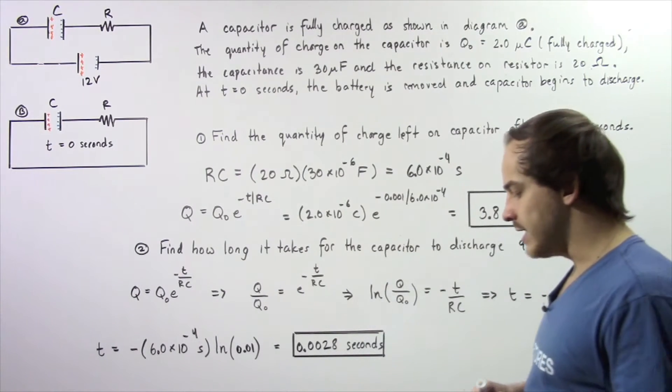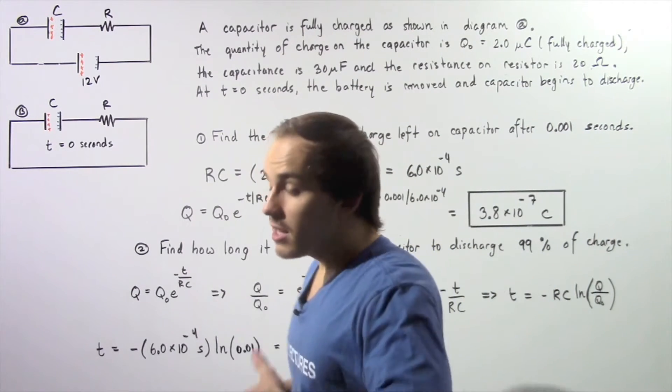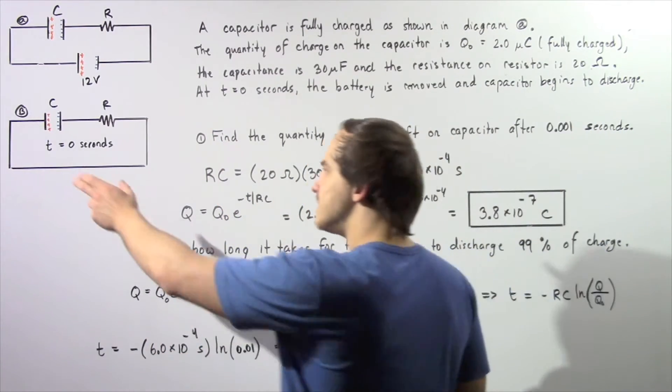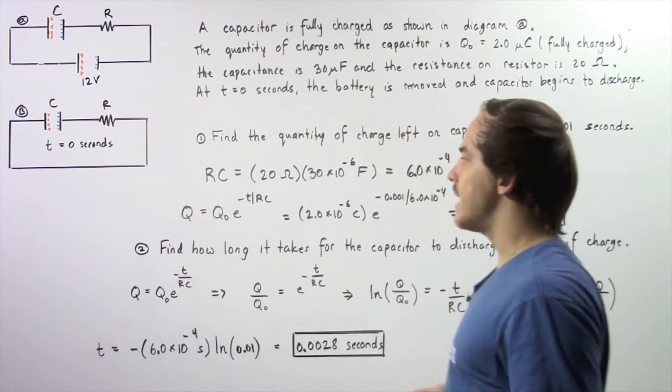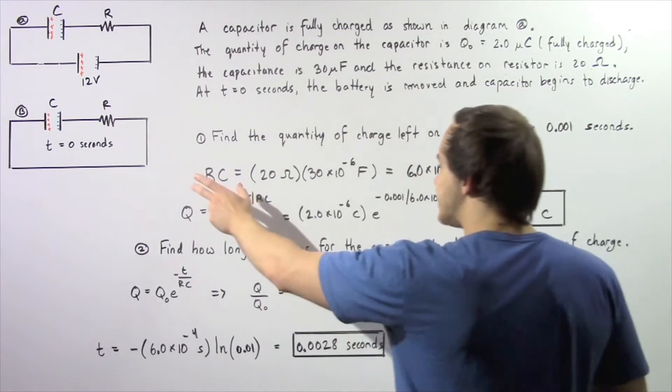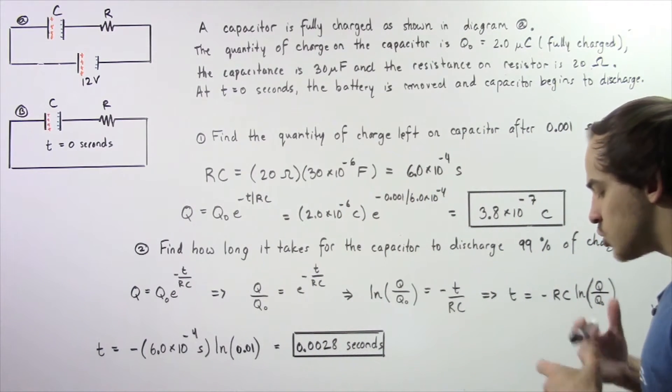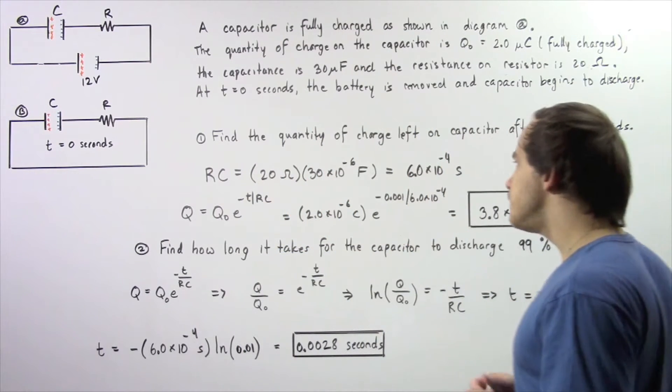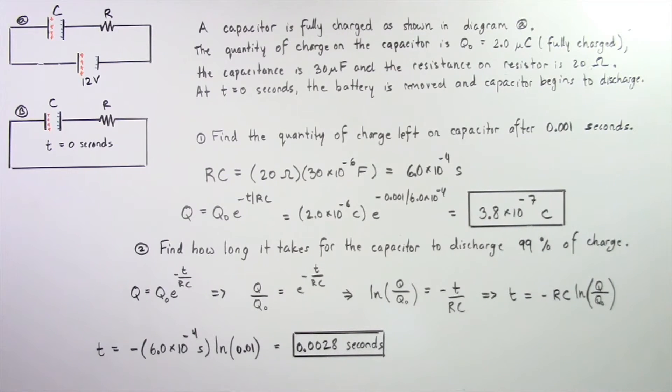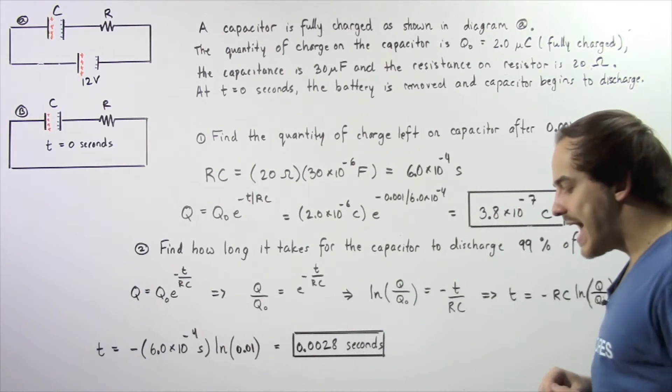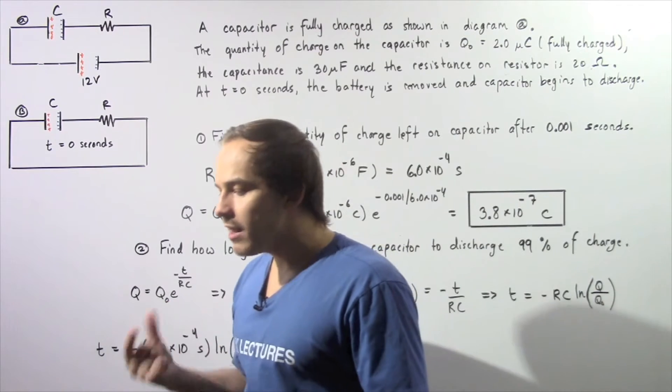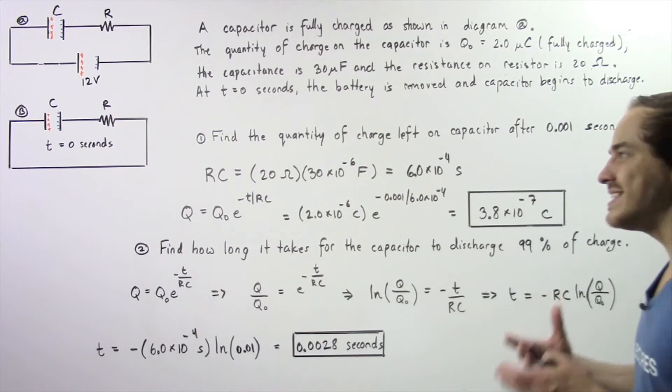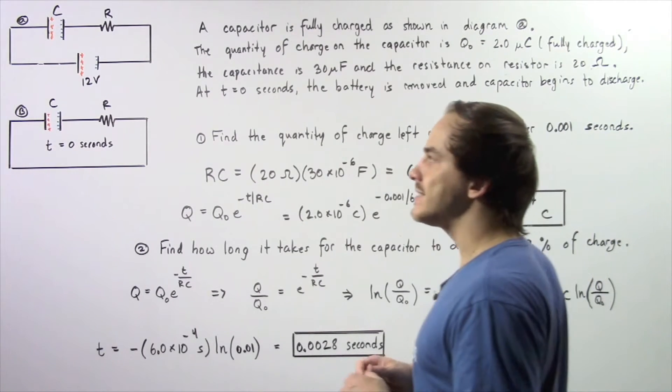Let's begin by calculating the time constant. The time constant of our capacitor is simply the product of the capacitance and the resistance, R multiplied by C. So 20 ohms multiplied by 30 times 10 to the negative 6 farads gives us 6 times 10 to the negative 4 seconds. This is our time constant, which tells us how long it takes our capacitor to discharge 63% of its electric charge.